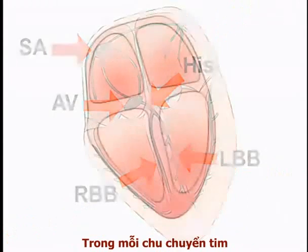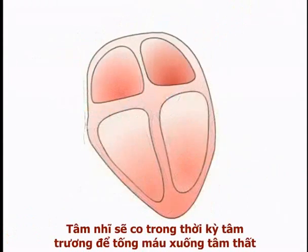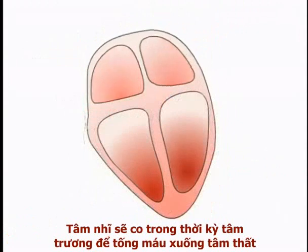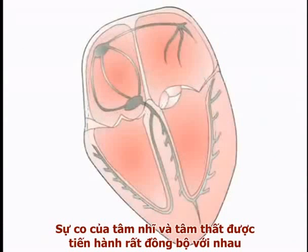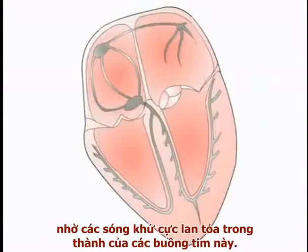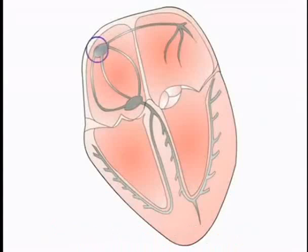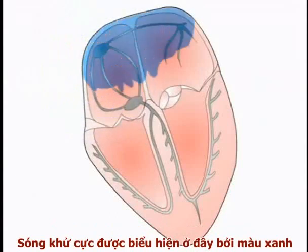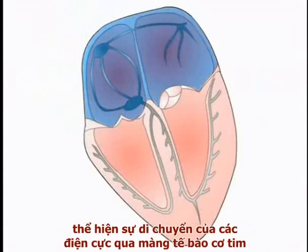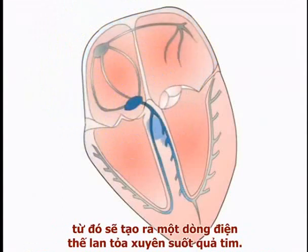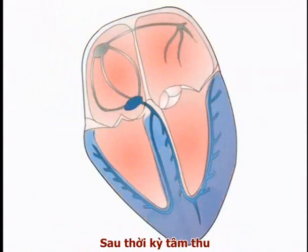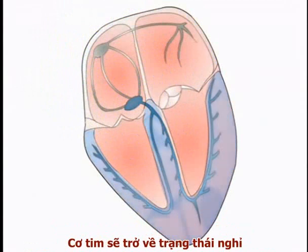During each cardiac cycle, the atria contract in diastole to fill the ventricles, which then contract during systole to supply blood to the lungs and the systemic circulation. Contraction of the atria and ventricles is tightly coordinated by a wave of depolarization spreading through the muscular walls of these chambers. The depolarization wave, seen here in blue, reflects movement of charge across myocyte membranes and is in effect an electrical current spreading through the heart.